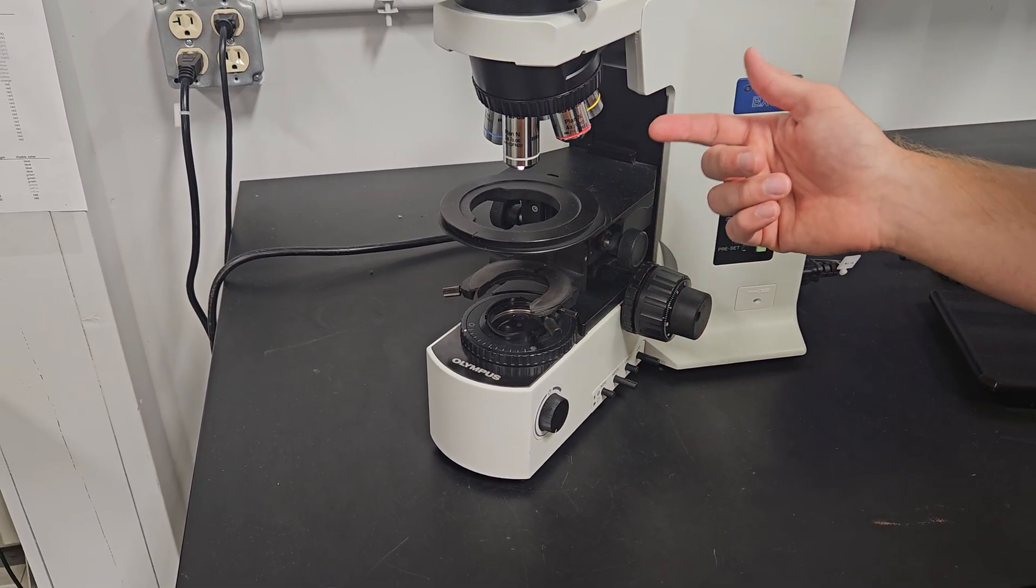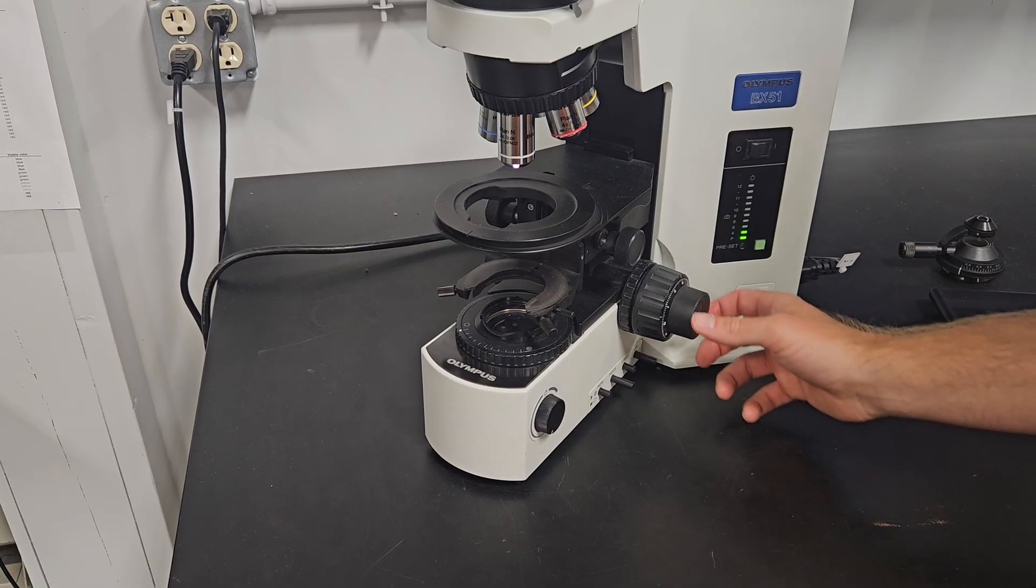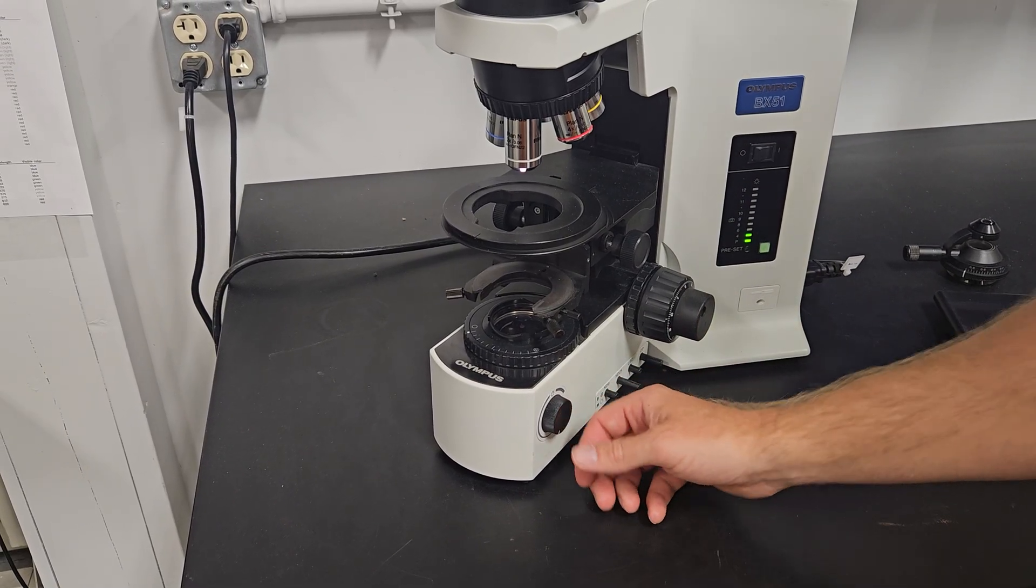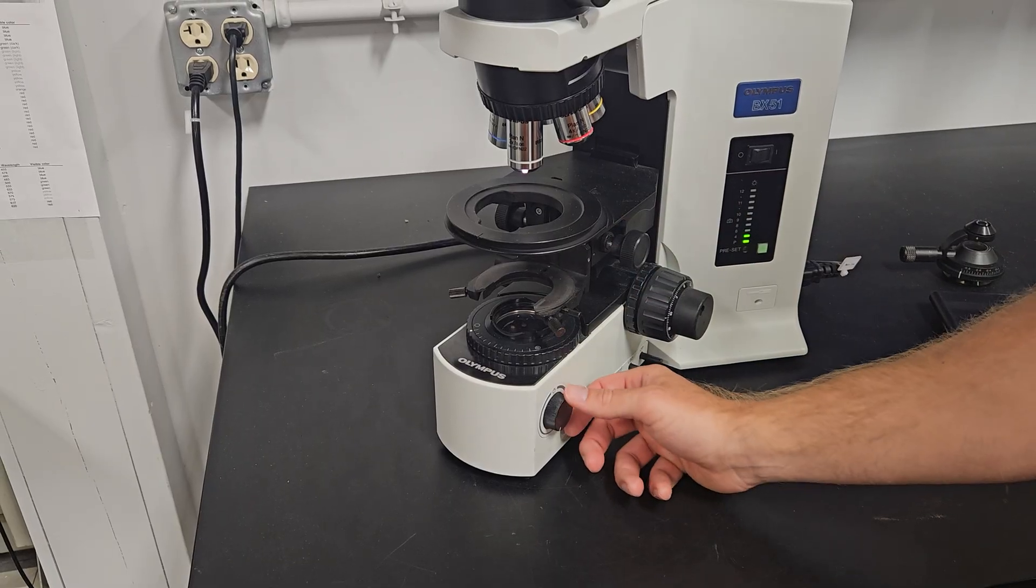So when you go from objective to objective, there's not a lot of focus. Specifications is within a quarter of a turn, but you usually can get it perfect. So there's no focus in between, which will help you with speed.